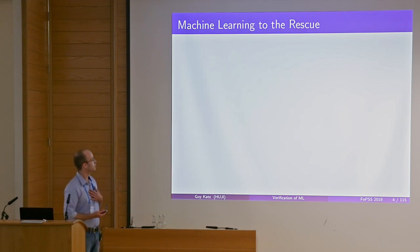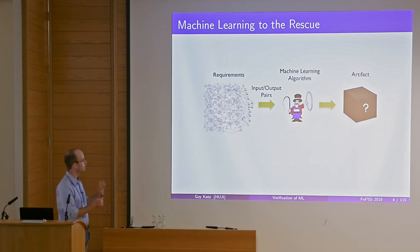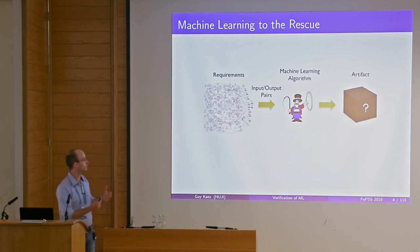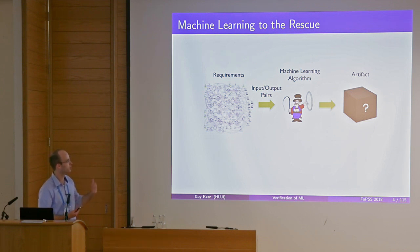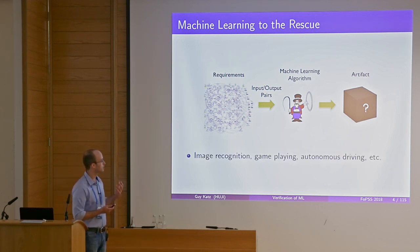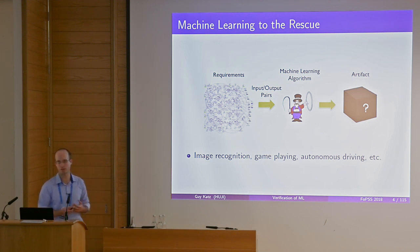In recent years, we've been seeing a trend where people are resorting to machine learning. You start with a very complicated set of requirements — think about autonomous driving. Creating software that satisfies these requirements manually is too difficult, so you extract examples of how the system should behave, give these to a machine learning algorithm, and get back an artifact — a black box that satisfies the requirements. This has proven remarkably useful for tasks like image recognition, game playing, and autonomous driving.